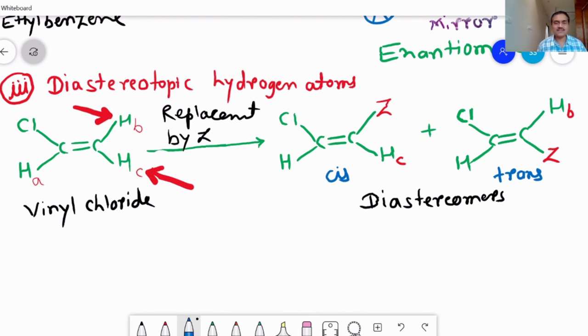We replace HB by Z and HC by Z. When we replace the HB by Z, we got the cis structure.